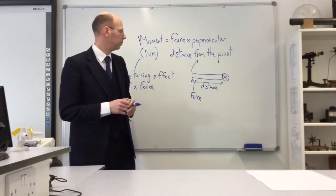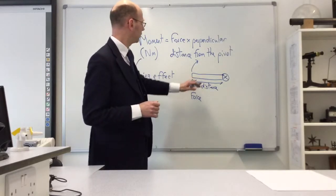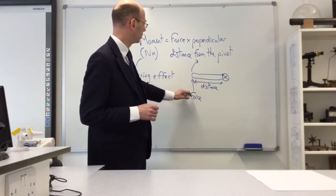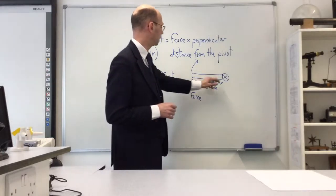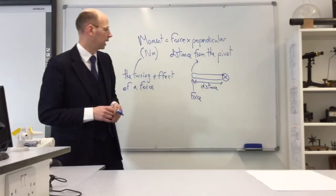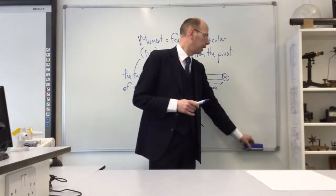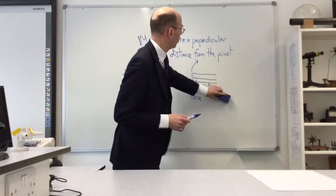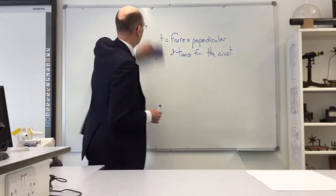The turning effect is bigger if the distance from the pivot is bigger. To calculate the moment, we multiply the force times that particular distance—the perpendicular distance between the pivot and where you're applying the force. Now why do we care about moments? We care about moments because we want to see whether things are balanced, whether they're in equilibrium.